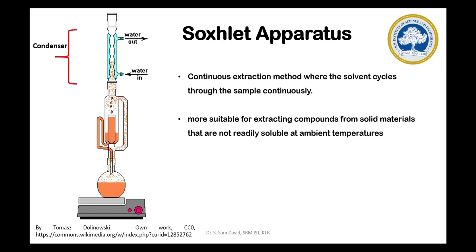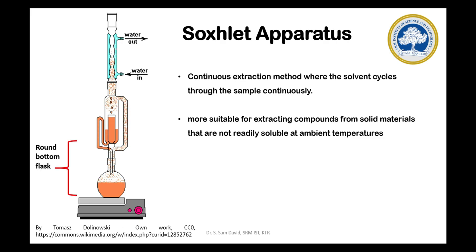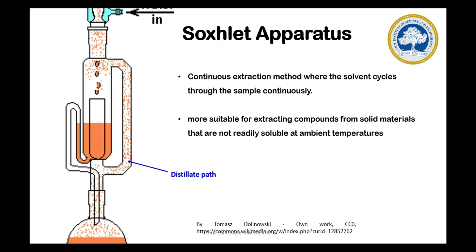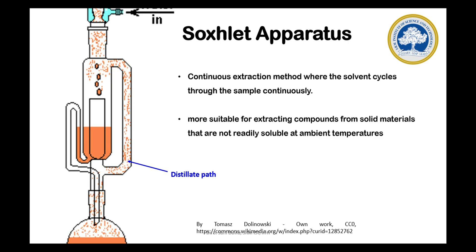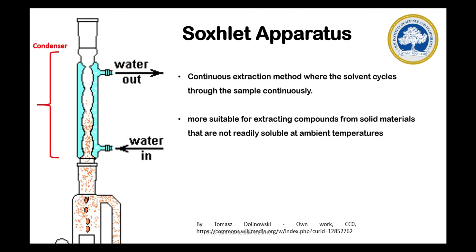During the Soxhlet extraction process, the solvent will be taken in the round bottom flask and it will be heated. Due to heating, the generated vapors of solvent flow through the distillate path and reach the condenser in the equipment.